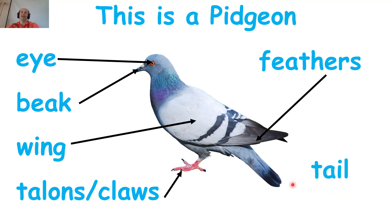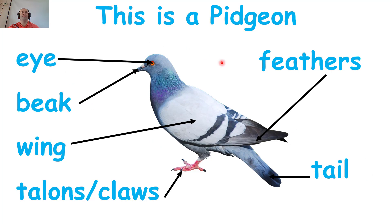And the last one is a tail. A pigeon has a tail. And many animals have a tail. So those are the parts. Can you remember them? We have: eye, beak, wing, talons and claws, feathers, and tail.